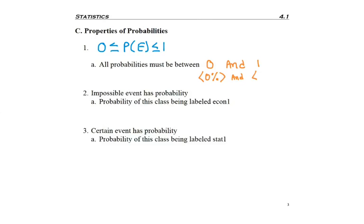And so we kind of list this that all probabilities must be between 0 and 1, just more of a verbal way of stating the symbols above. Keep in mind that means 0% and 100% because we can also list those values as percentages. So what we care about too is what's called an impossible event. And this has a probability of 0 or listed as 0%. Like this class being labeled Econ 1, it will never happen.